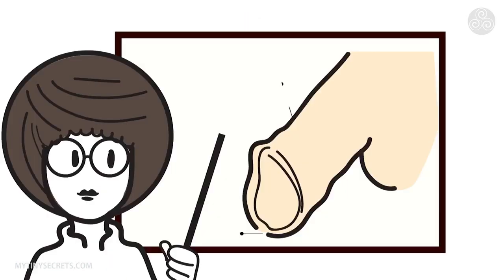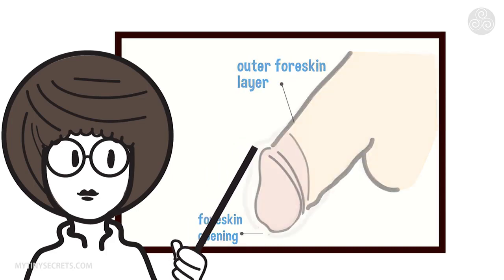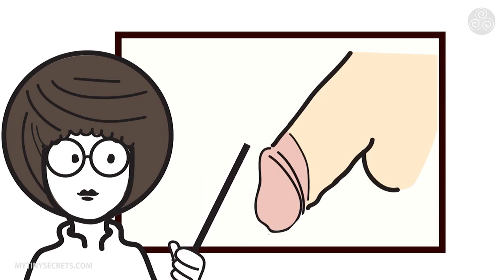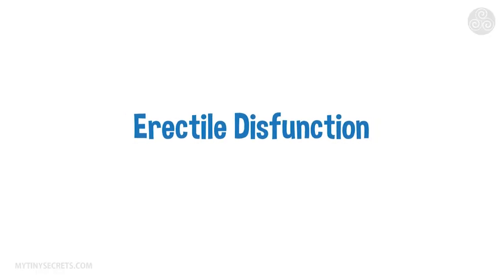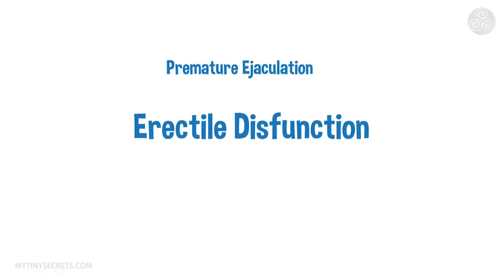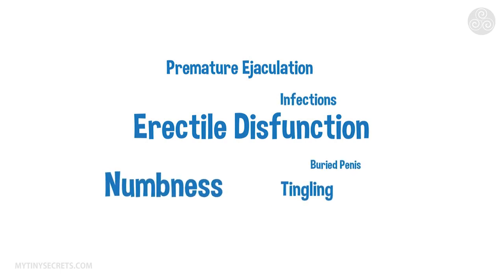Each year over 100 newborn baby boys die as a result of circumcision complications. The foreskin is a densely innervated structure. When it gets destroyed and damaged, it can cause a myriad of problems, such as erectile dysfunction, premature ejaculation, infections, a buried penis, tingling, numbness, decrease of sexual sensation, and many, many more issues.